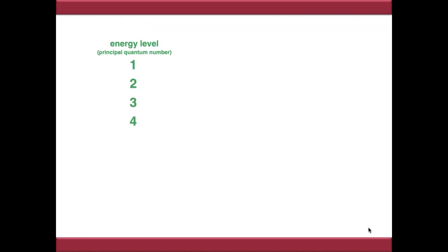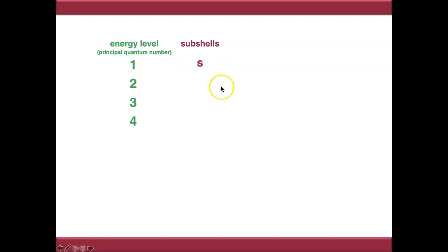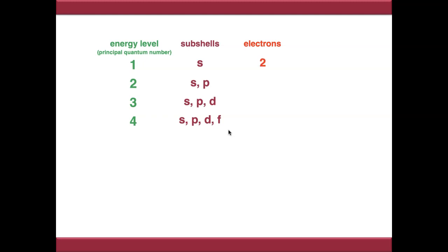Looking at our energy levels and principal quantum number, we can essentially construct the periodic table. In energy level 1 we only have an S subshell; in energy level 2 we have S and P; in energy level 3 we have S, P and D; and in energy level 4 we have S, P, D and F. Because each orbital can only hold two electrons, there's a limit to the number of electrons per shell. We can hold two electrons in energy level 1, since we only have a single S orbital.